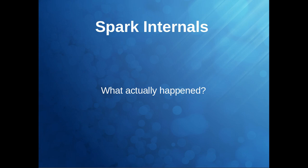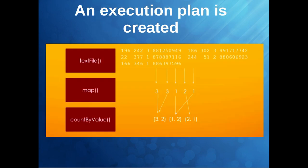Let's look at what actually happened in our last example. We took data from the MovieLens dataset and created an RDD. Then we transformed that RDD and applied a map function to extract the ratings data. Finally we performed the action countByValue, and we got the number of counts for each rating. This is the execution plan: using textFile we loaded the raw data into an RDD, then by applying the map function we got the ratings RDD, and finally countByValue gave us the counts.